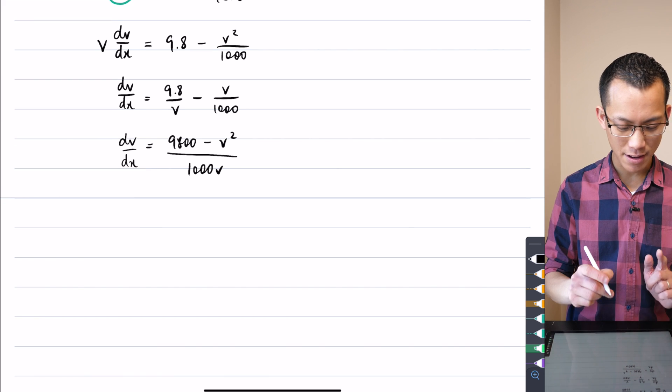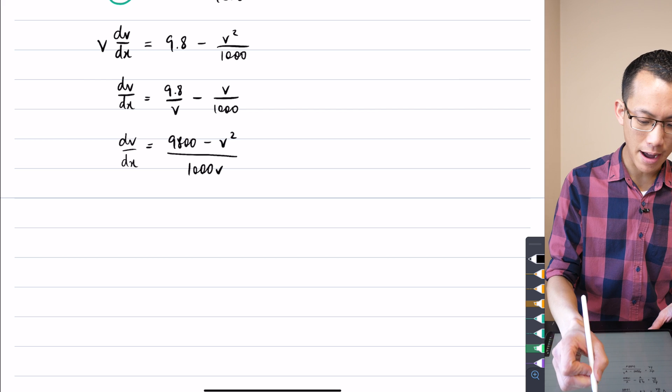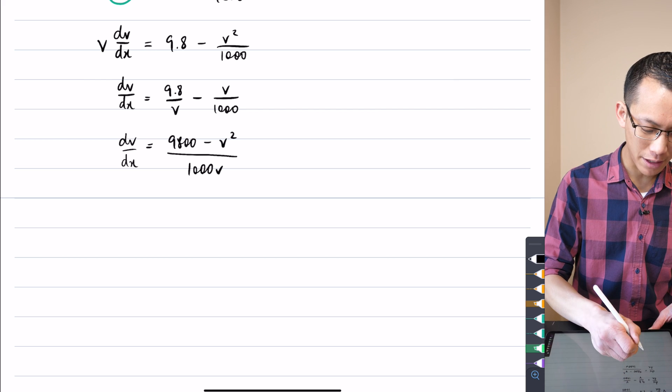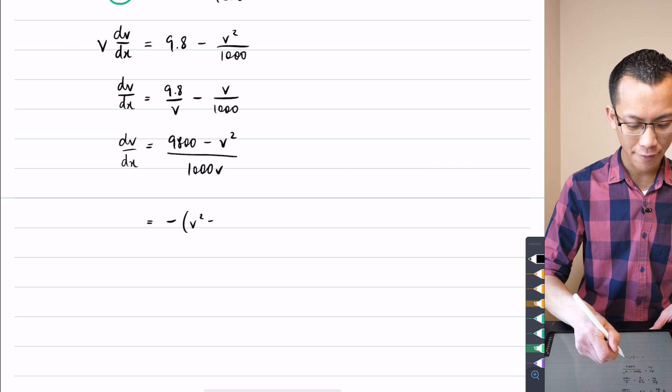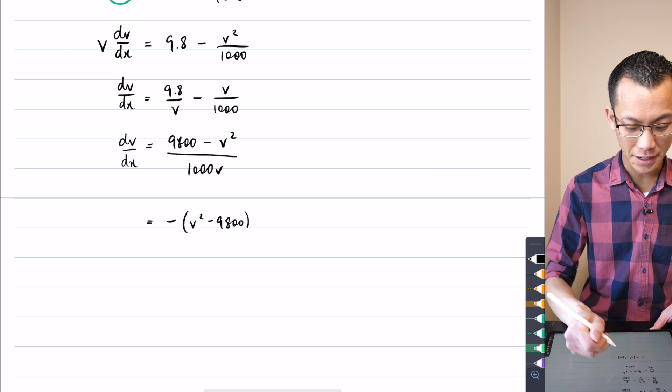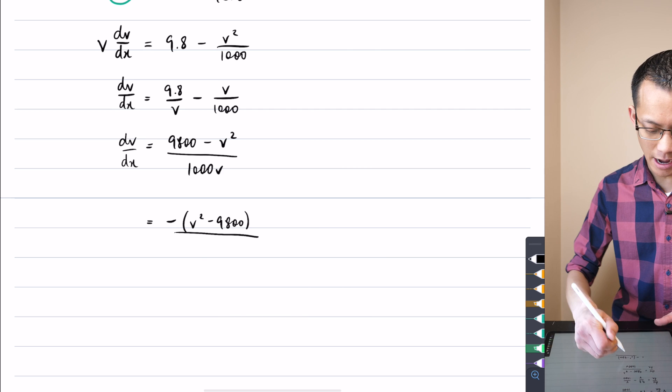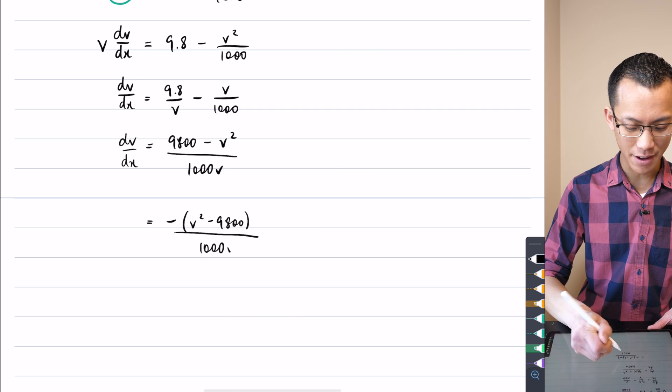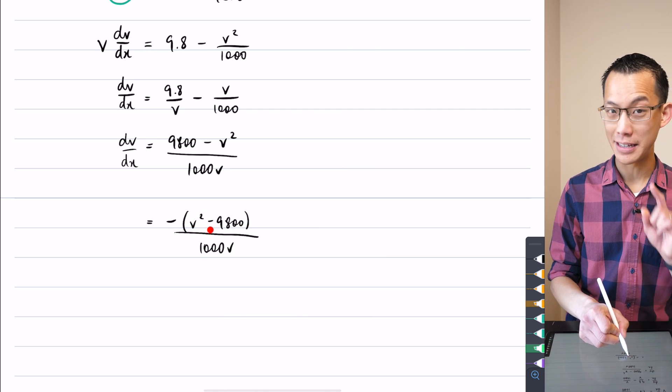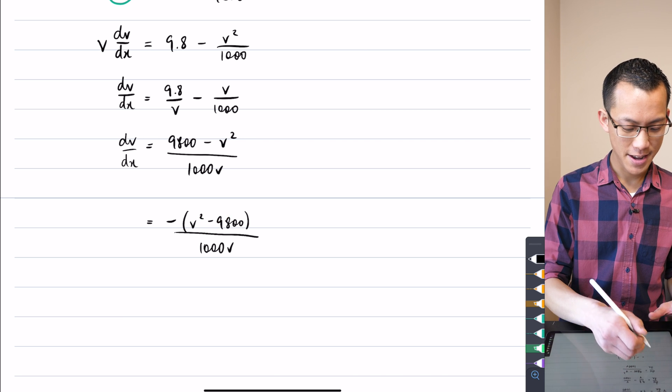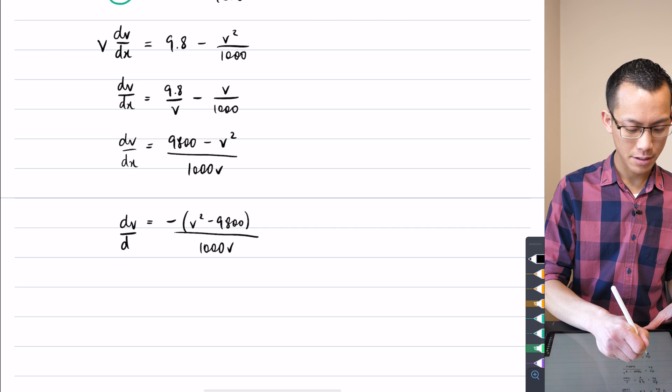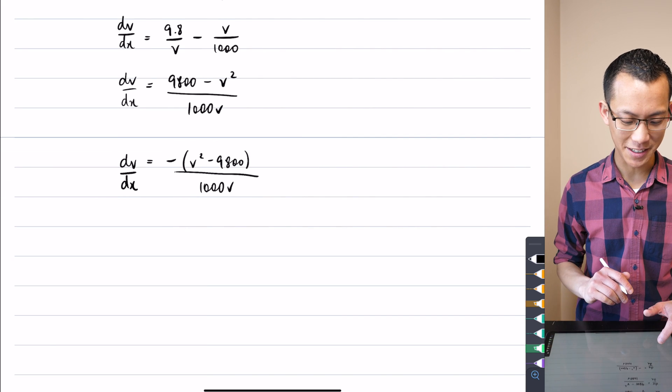I'm going to put a minus sign there and that flips around the order of the difference on my numerator. I want that because having a positive value for v in what's going to become my denominator will just make integration easier, less minus signs flying around. Now I'm ready to go.